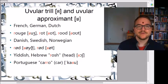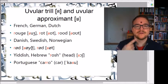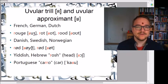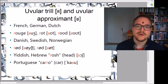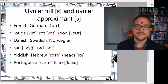Now we come to the third version of rotics: the uvular rotics. You either have the uvular trill, where the uvula is swinging, or the uvular approximant, which is more of a rasping sound. The uvular approximant is more common because it's easier to pronounce, but a uvular trill can appear in many languages. For example, in French 'rouge', German 'rot', or Dutch 'rood', all meaning red.